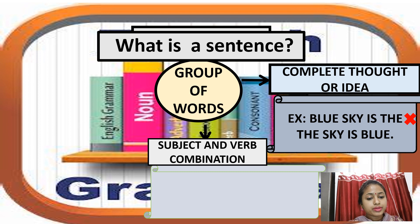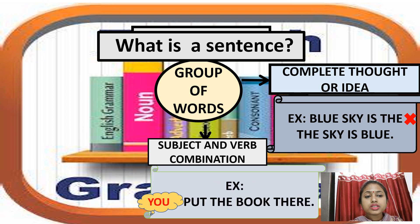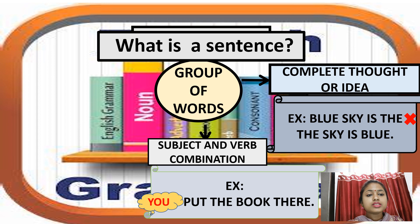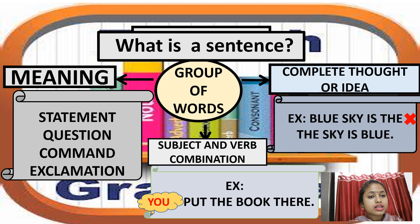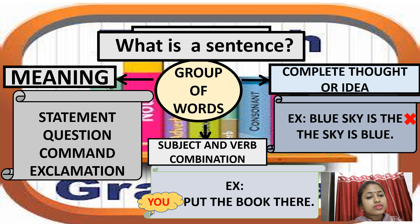But some exceptions are there. For example: 'Put the book there.' Can you find the verb? Yes — 'put.' Somebody is putting the book there, but where is the subject? In this kind of sentence, the subject is automatically understood — that is 'you.' Now, does each and every sentence mean the same? No, it does not, because meaning differs with the type of sentence — whether it is a statement, a question, a command, or an exclamation.